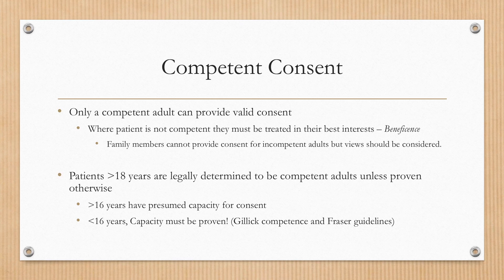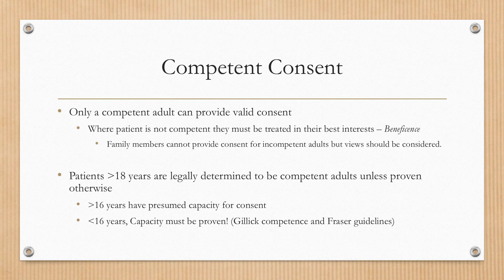Competency for consent is a slightly more difficult concept to understand. Only a competent adult can provide valid consent. Where the patient is not competent, they must be treated in their best interests using the ethical principle of beneficence. Family members have no legal right to provide consent for incompetent adults, but their views should be considered. Patients greater than 18 years are legally determined to be competent adults unless proven otherwise. Children greater than 16 years have presumed capacity for consent. Children less than 16 years are presumed not to have capacity for consent, unless this can be proven by the doctor using Gillick competence and Fraser guidelines, which we will discuss later on.